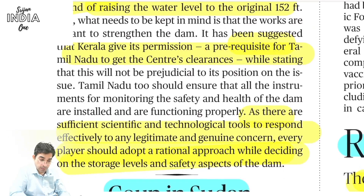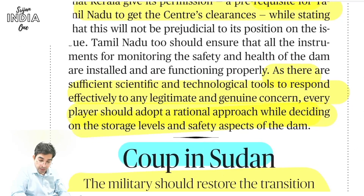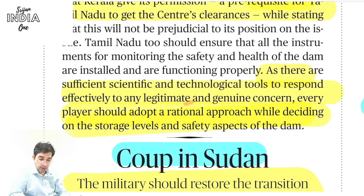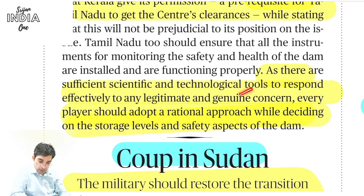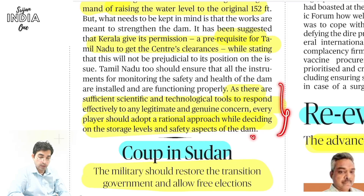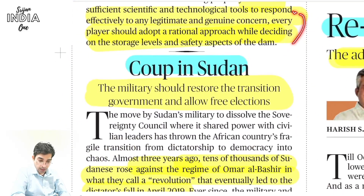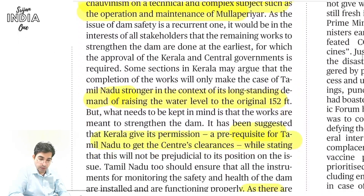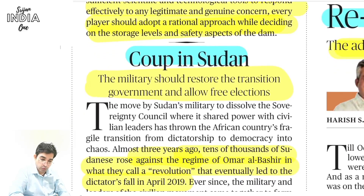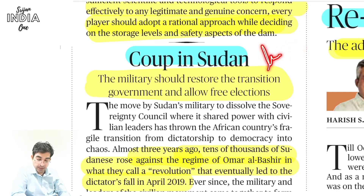When people in Kerala start fighting and people in Tamil Nadu start fighting — mass mobilization — that is not a solution. The solution: look at it technically, scientifically, legally, and listen to expert engineers. Only that way can a water level solution be found. Tamil Nadu wants 152 feet; Kerala says the dam is old, reduce the water. The article's key takeaway: 'As there are sufficient scientific and technological tools to respond effectively, every player should adopt a rational approach while deciding on the storage level and safety aspects of the dam.' This is how we read current affairs — wave-type, gradually understanding the subject for a holistic view.